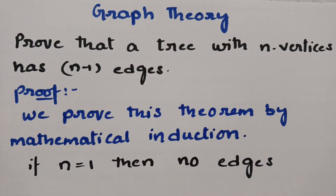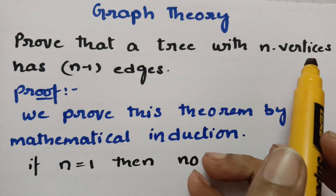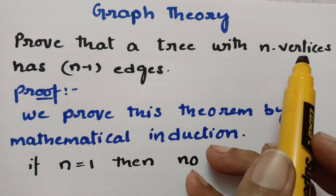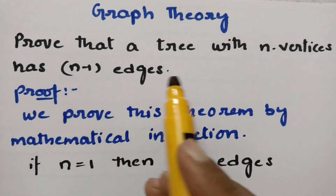Today's video is on the most important theorem, and this is a repeatedly asked equation from graph theory. The statement says: prove that a tree with n vertices has n minus 1 edges.